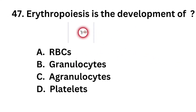Question number 47. Erythropoiesis is the development of: Option A: Red blood cells. Option B: Granulocytes. Option C: Agranulocytes. Option D: Platelets.